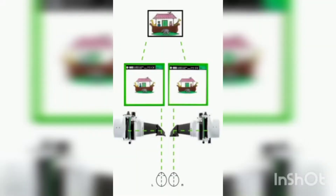We can also measure the negative fusional vergence (NFV) and positive fusional vergence (PFV) with the help of the synoptophore. There are abduction and adduction keys for this. How to measure NFV and PFV will come up in the next video. Till then, thank you.